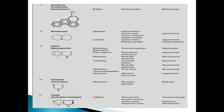The next class is imidazole alkaloids. An example is pilocarpine. Pilocarpus jaborandi is the botanical origin and Rutaceae is the family. The next class is purine alkaloids.